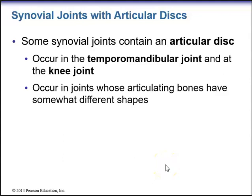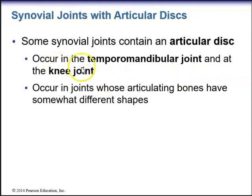Some synovial joints contain an articular disc. These occur especially in the TMJ (temporomandibular joint) and at the knee joint. Articular discs occur in joints whose articulating bones have somewhat different shapes.